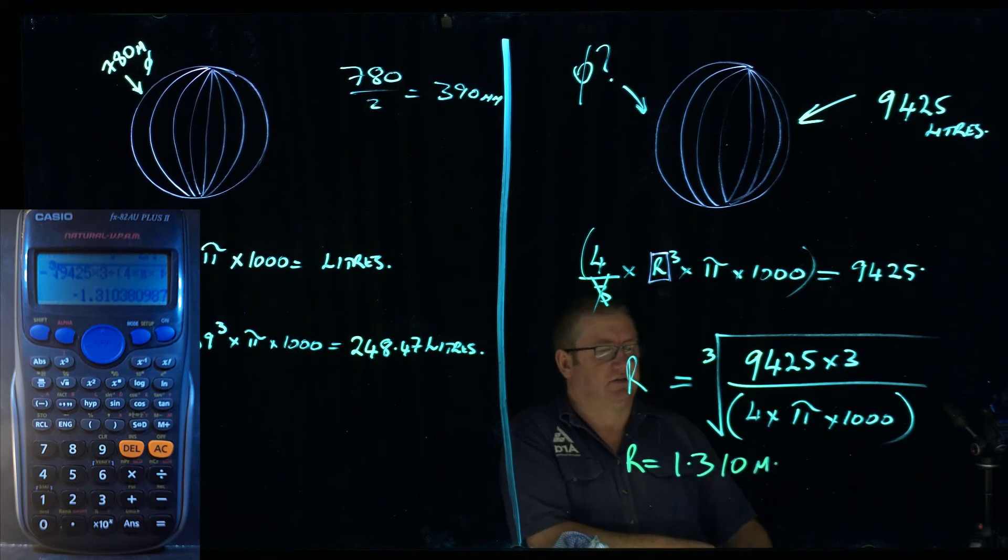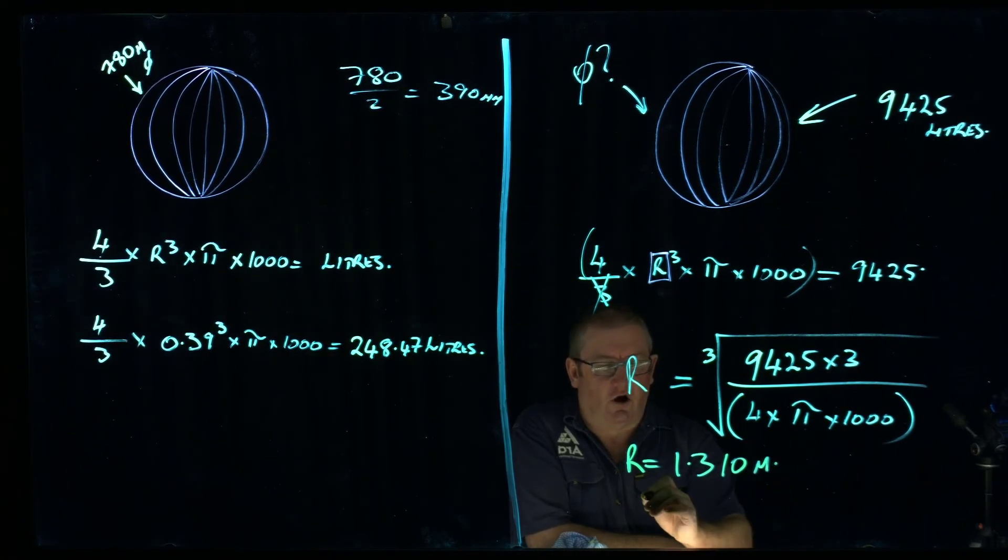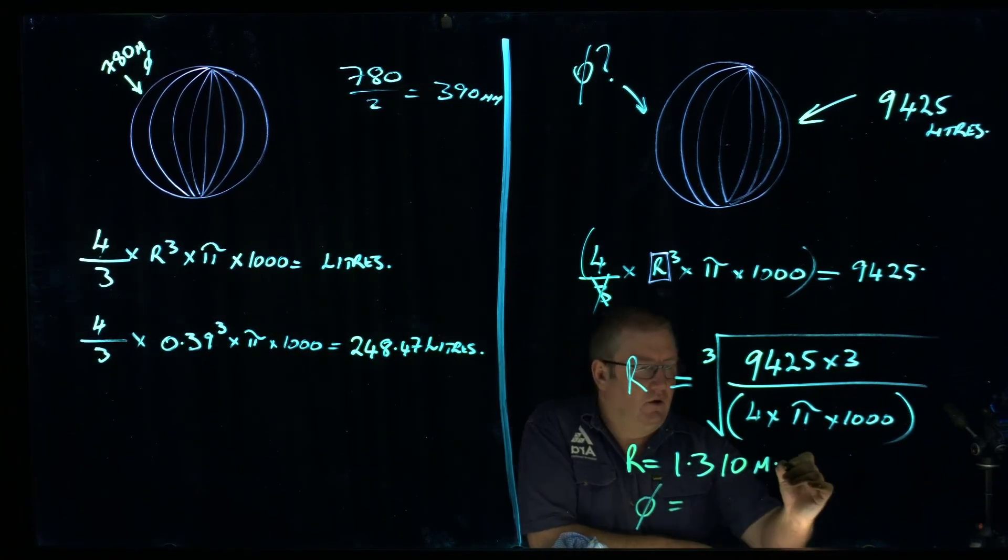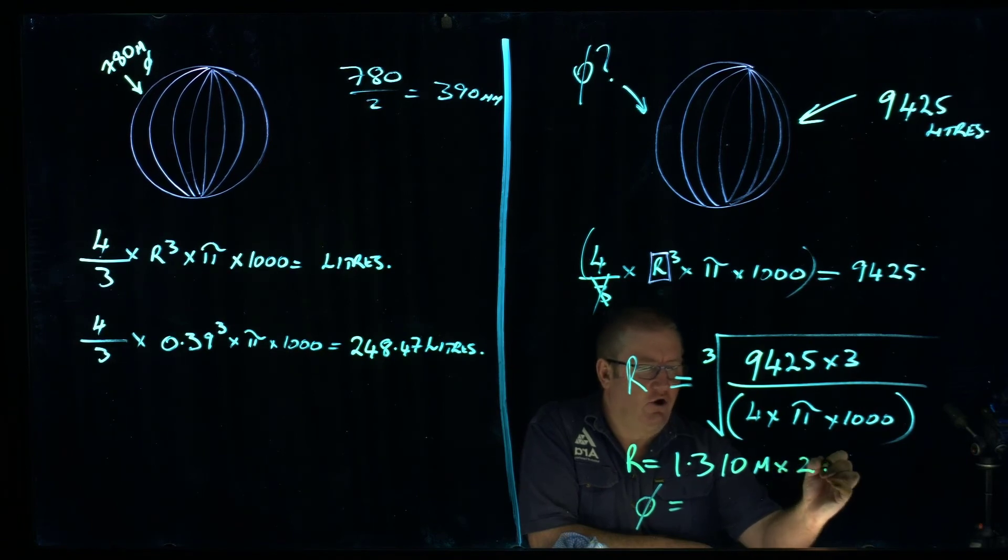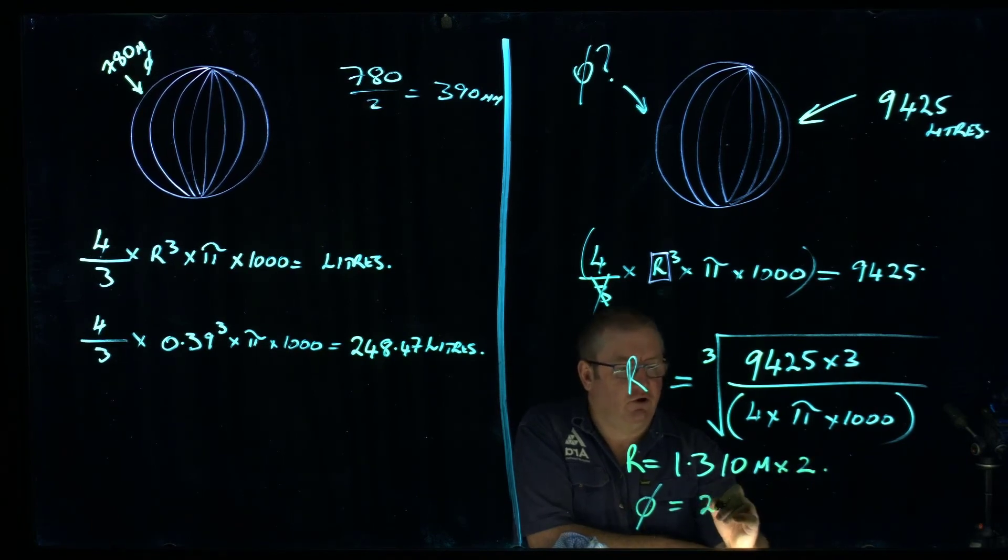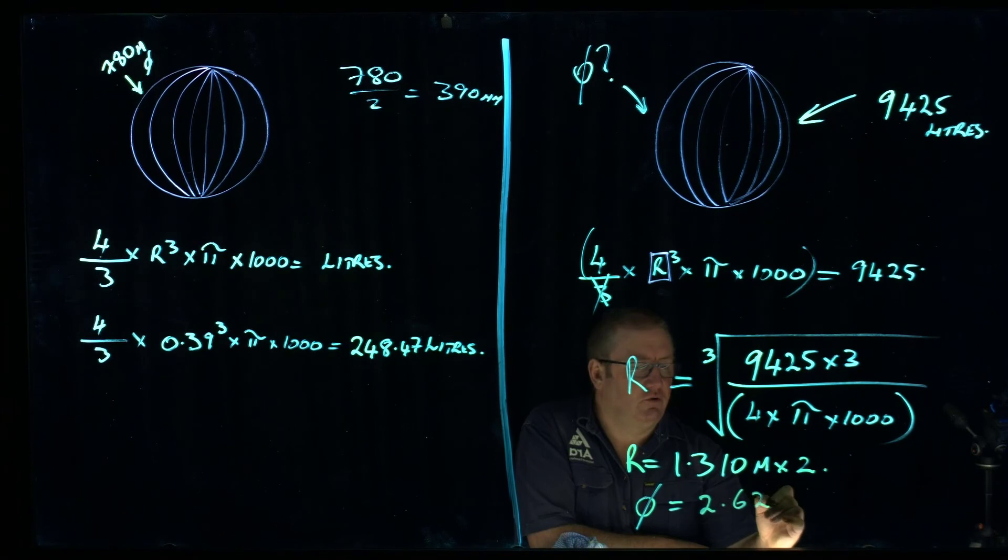Now that's the radius. So in order to get to the diameter, we have to times that by 2, which gives us 2.620 meters in diameter.